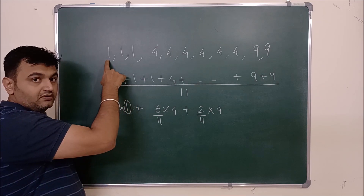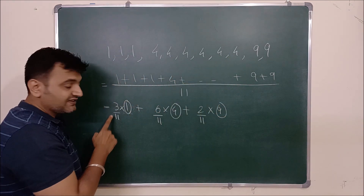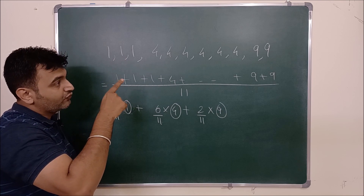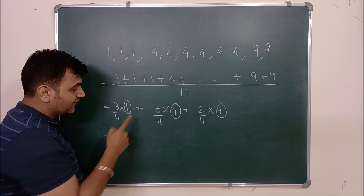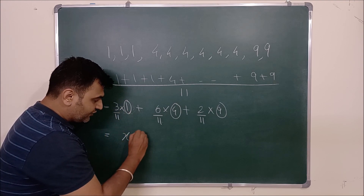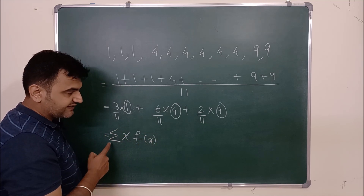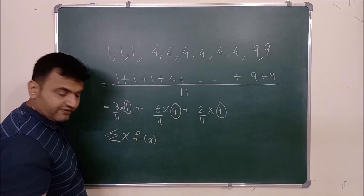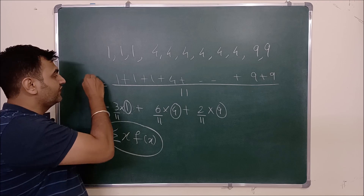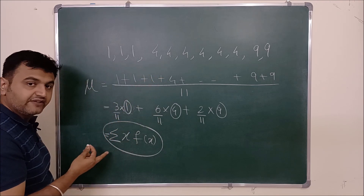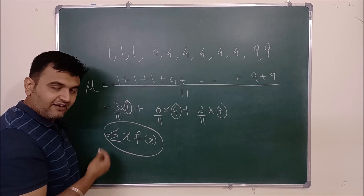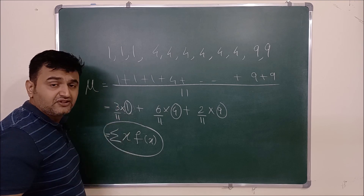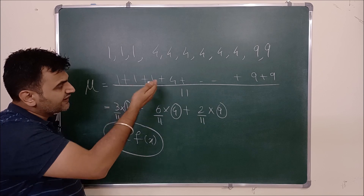Separating the denominator gives 3/11, 6/11, and 2/11. These x values (1, 4, 9) multiplied by their respective fractions — 3/11 is the probability of choosing 1, 6/11 is the probability for 4, and 2/11 is the probability for 9. So this is nothing but x times f(x), summed over all values x takes (1, 4, 9), or equivalently from minus infinity to infinity with f(x) = 0 elsewhere. This is how the definition of mean for any dataset arises.